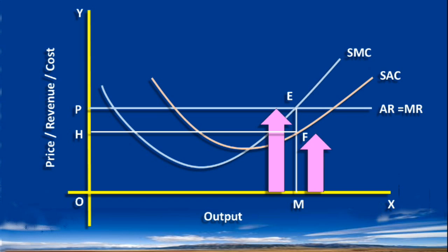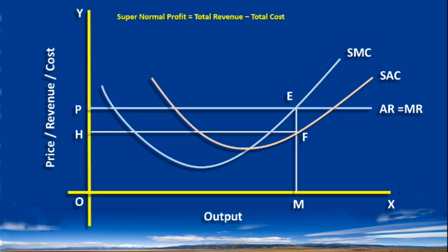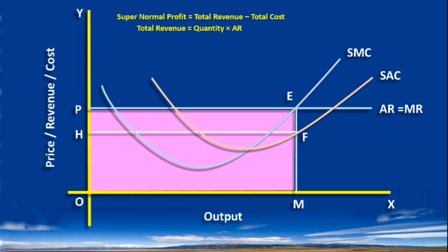Super Normal Profit is equal to Total Revenue minus Total Cost. Total Revenue is equal to Quantity multiplied by Average Revenue or Price. According to our graph, OM multiplied by OP. Area OPEM represents Total Revenue.